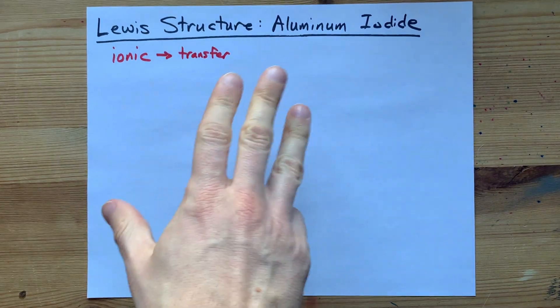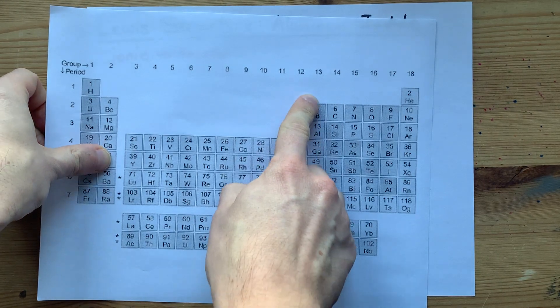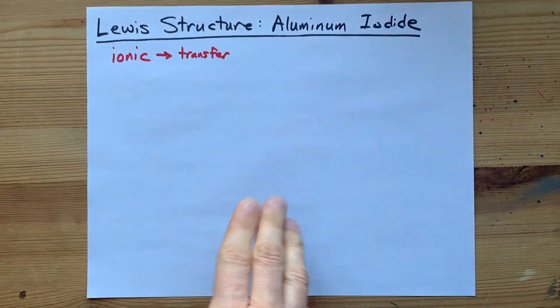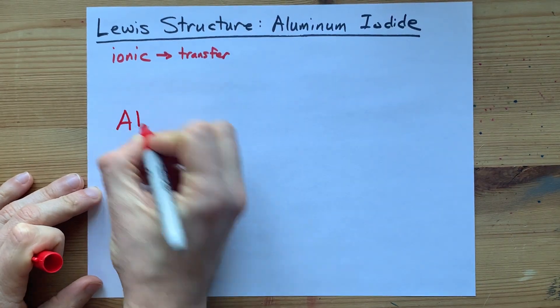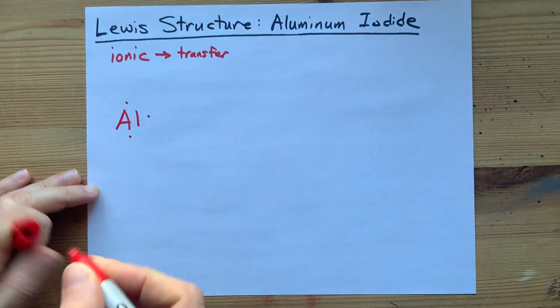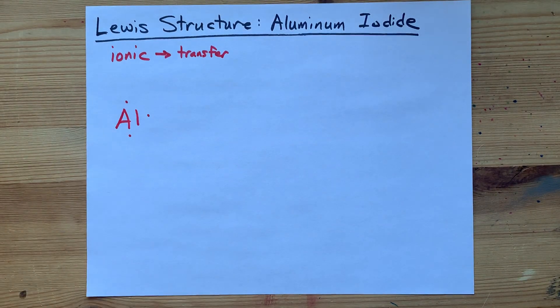Now, how do we show that transfer of electrons? Well, aluminum is in group 13, so it brings three valence electrons with it. I'm going to give myself an Al atom with one, two, three valence electrons. Beautiful.